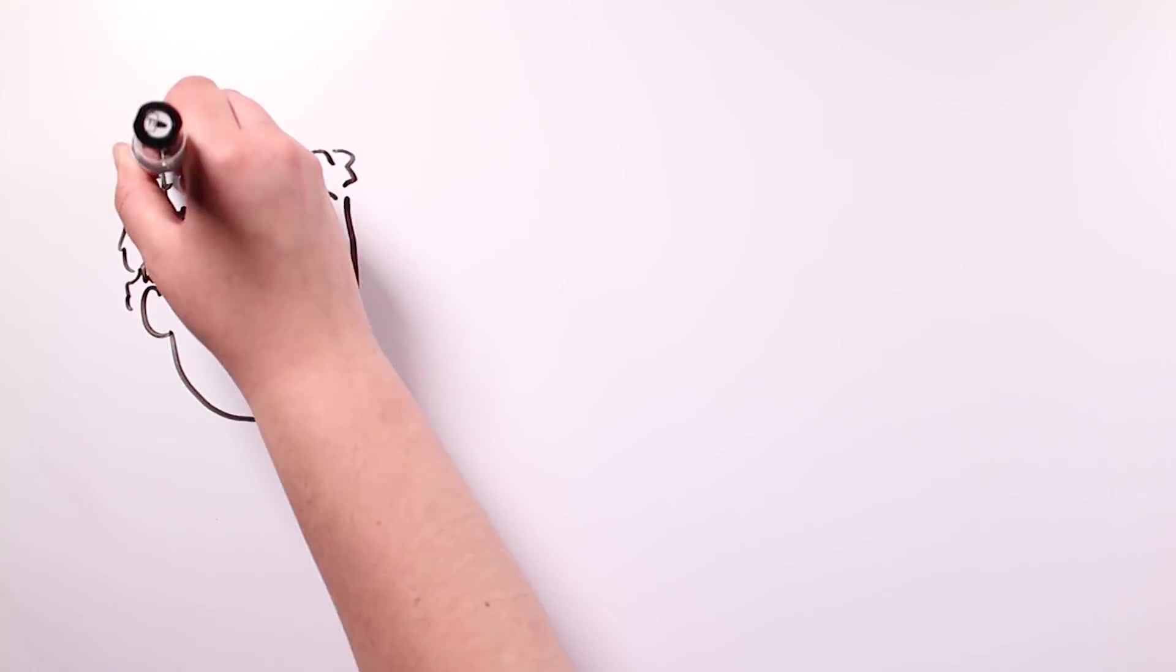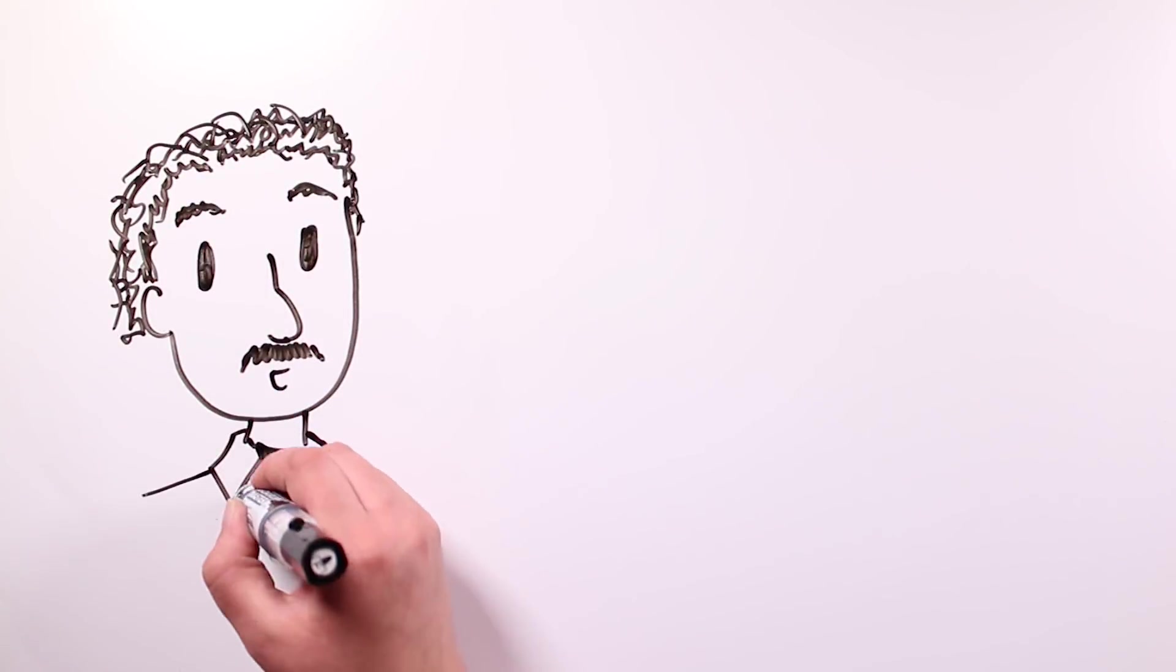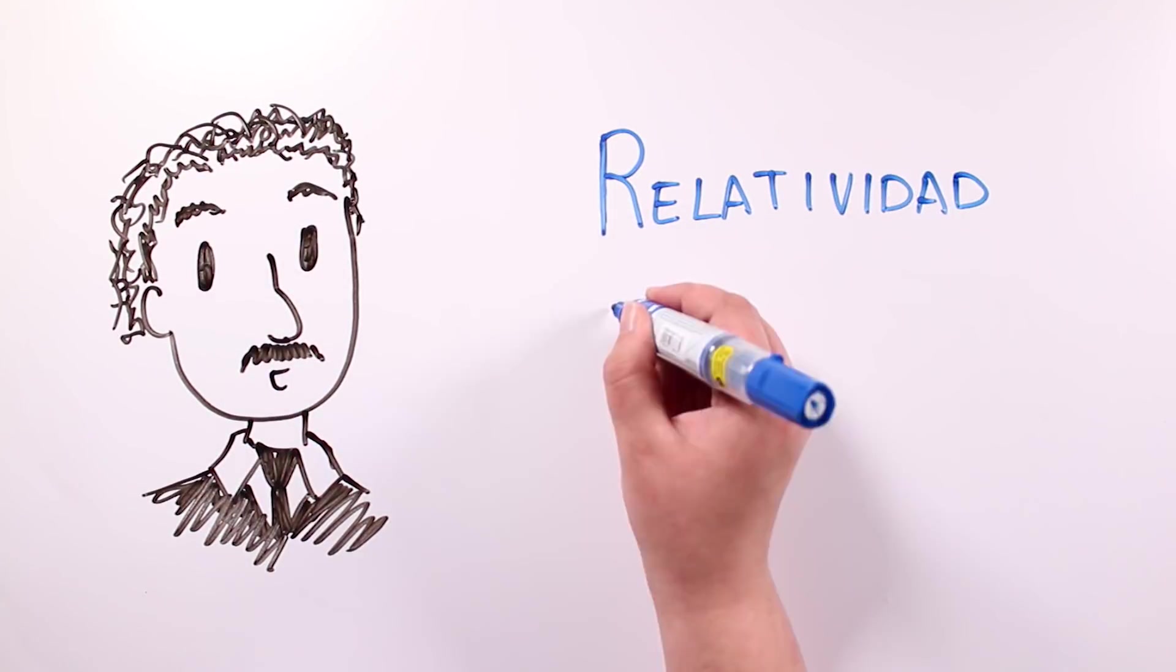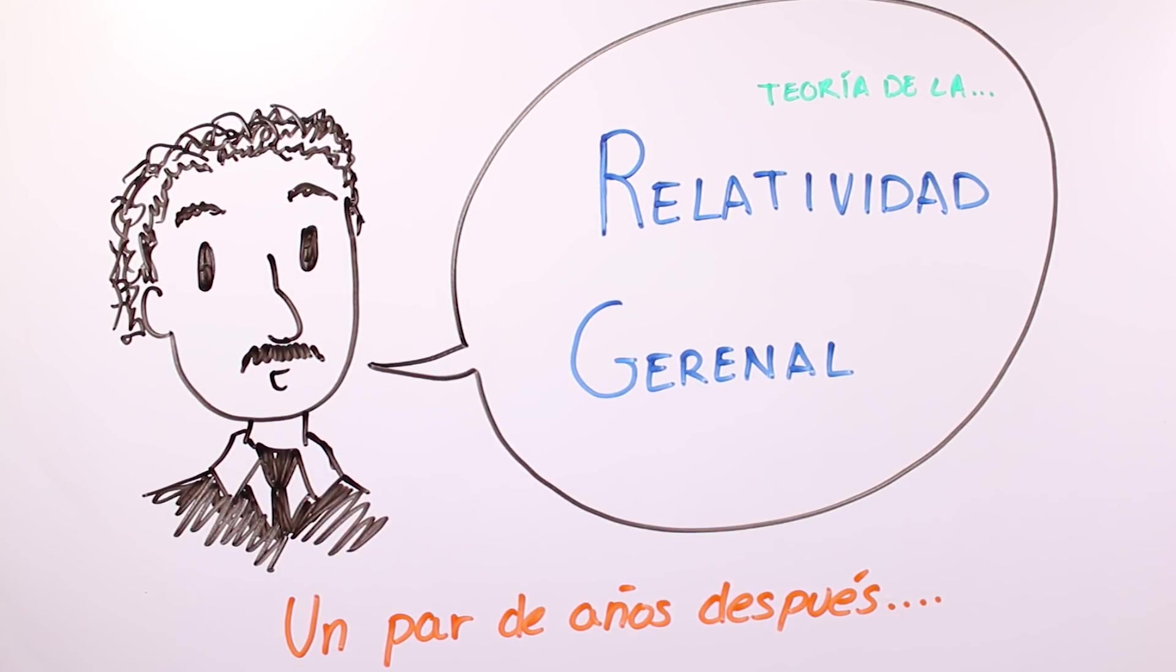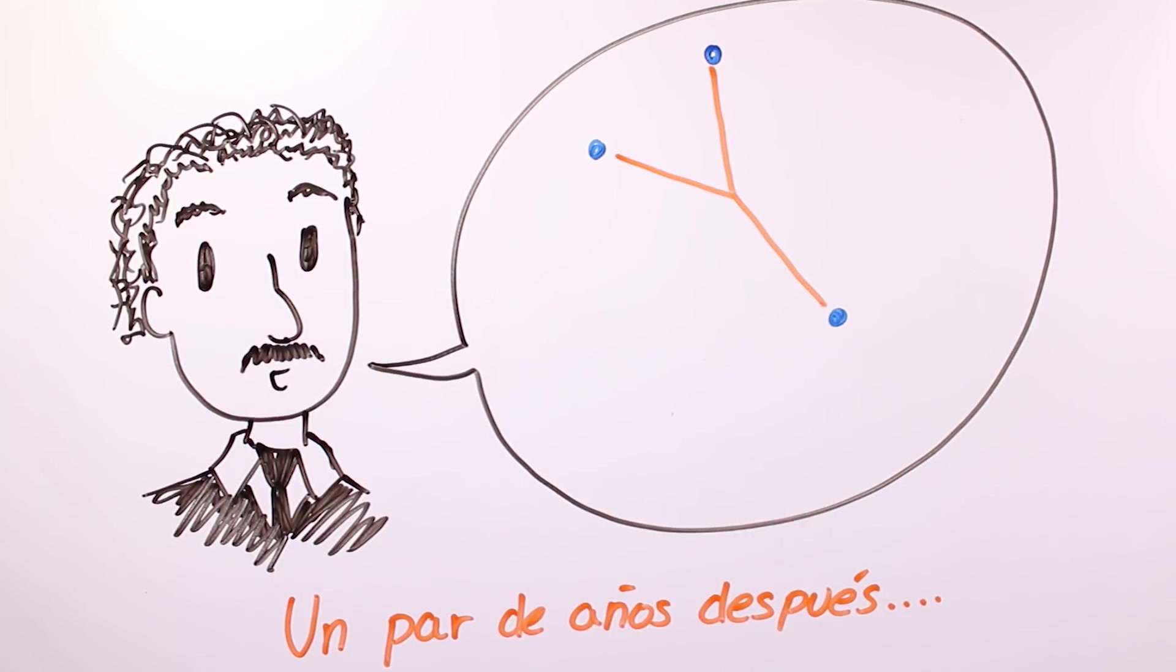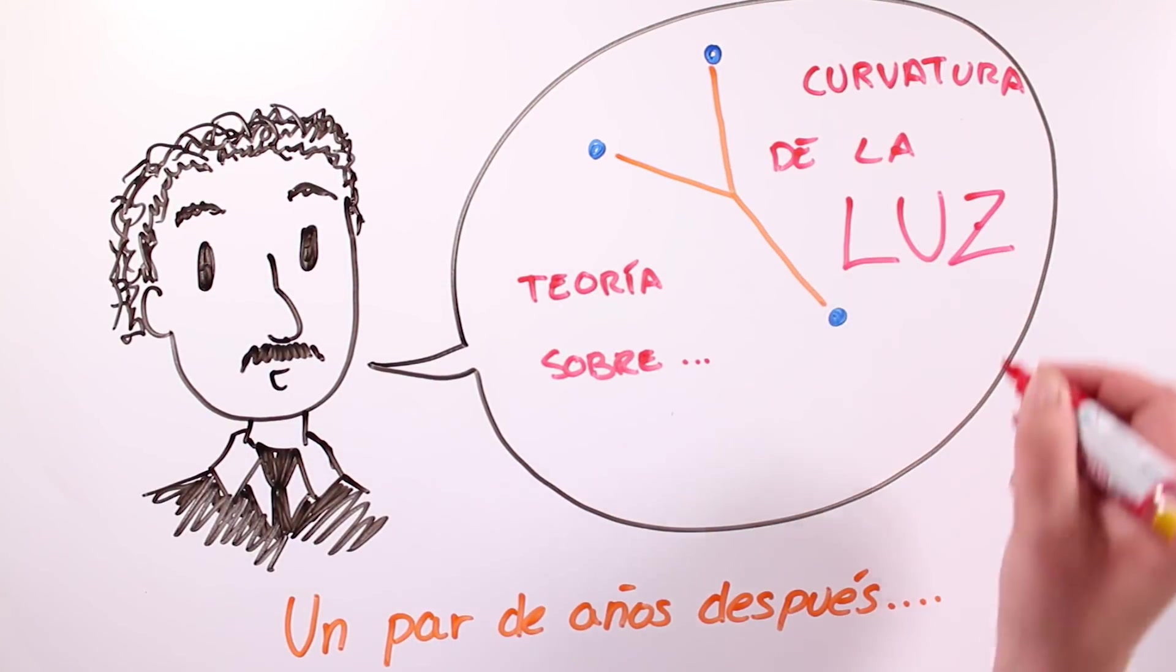In 1915, he published his general theory of relativity, which reformulated completely the concept of gravity. A couple of years after that, he'd confirmed his theories about light curvature. This man never took a break!